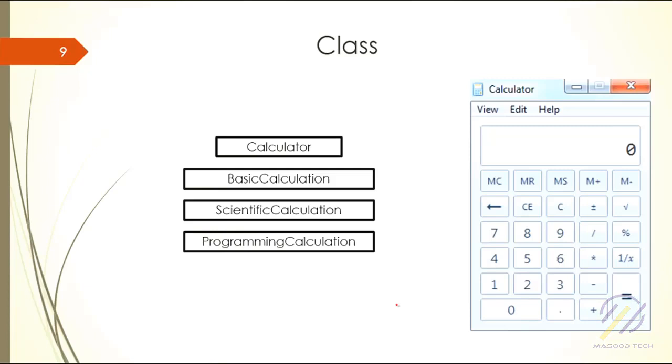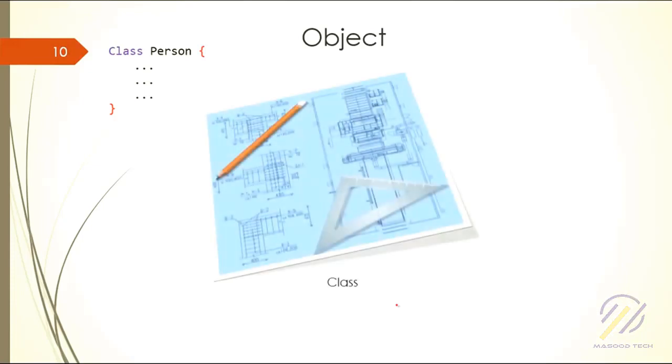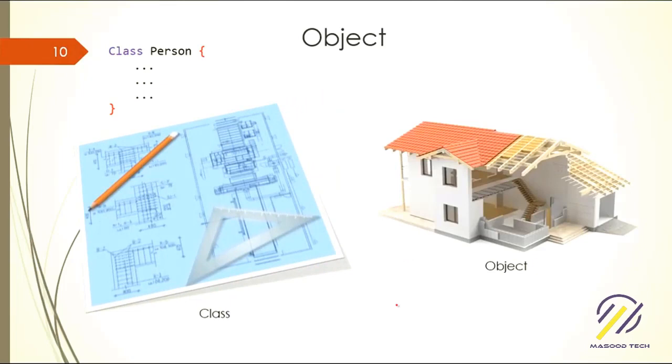So what is object? A class is abstract representation, like this.